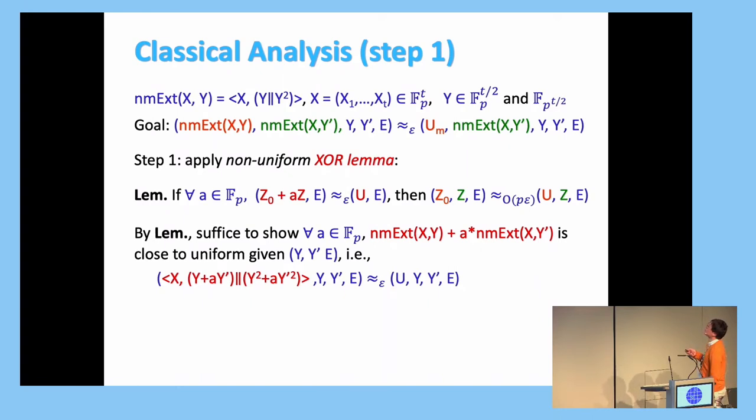So let's see this again. So this is a requirement of non-malleable extractor. We want the output conditioned on output of Y' is uniform. So first step is to use this XOR lemma that says if Z_0 plus AZ is close to uniform for all A, then Z_0 conditioned on Z is close to uniform conditioned on Z. And let's just match things together. So let's say Z_0 is the non-malleable extractor output, and Z is output with Y'. So this side looks close to what we want to prove. So we just need to prove this side.